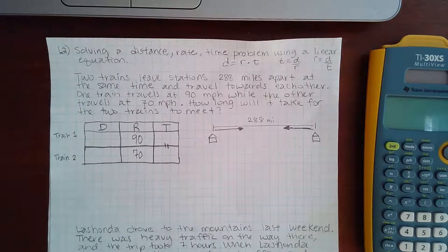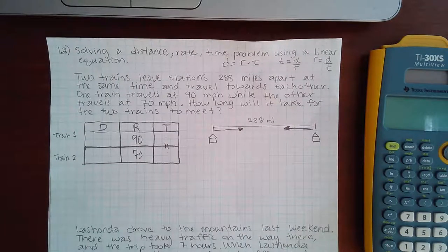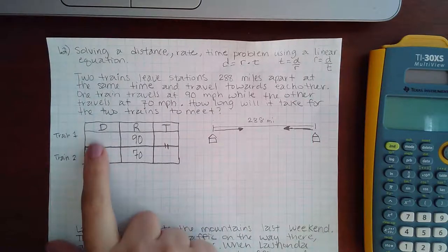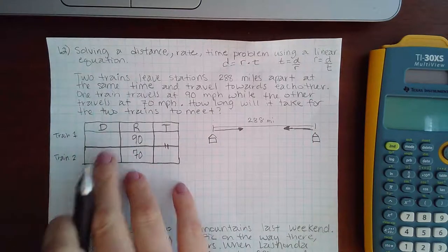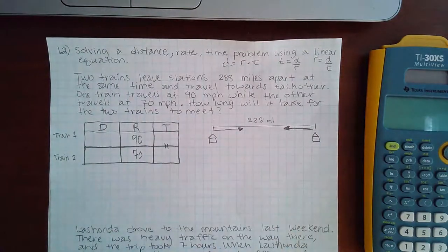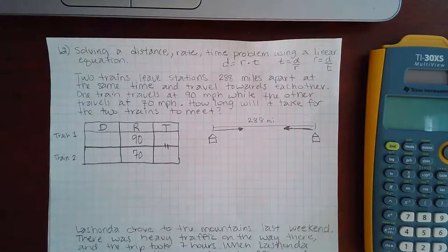Now the next thing says, how long will it take for the two trains to meet? So I don't know anything about their distance. Well I do, and I do know something about their time. All I know about their time is that their time is equivalent.